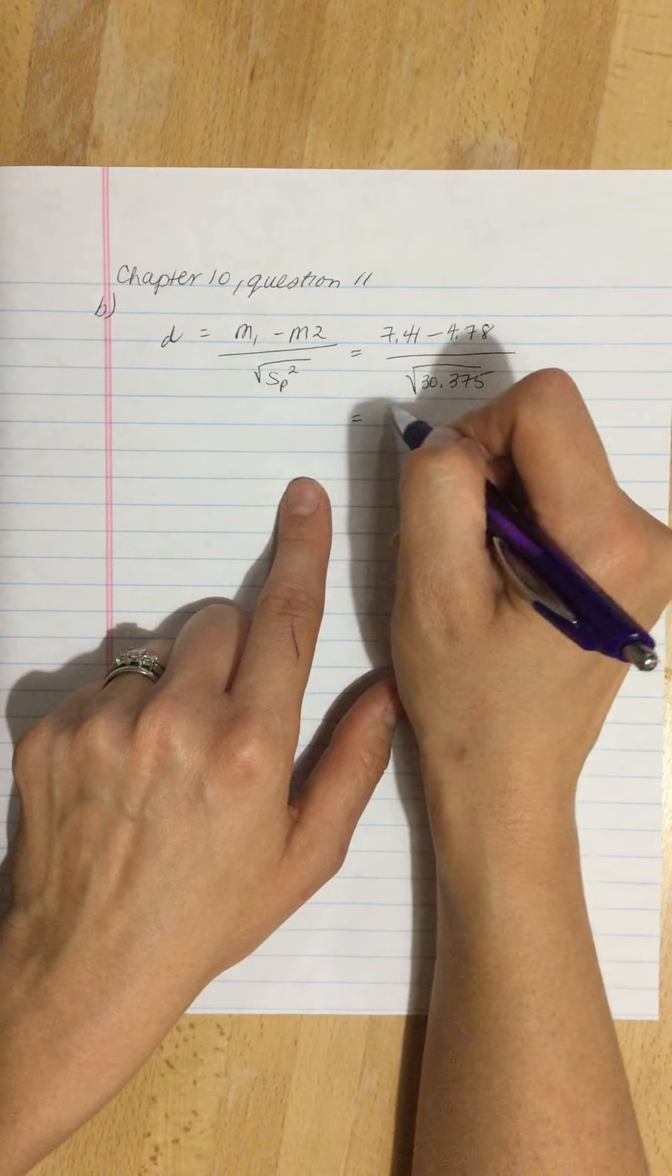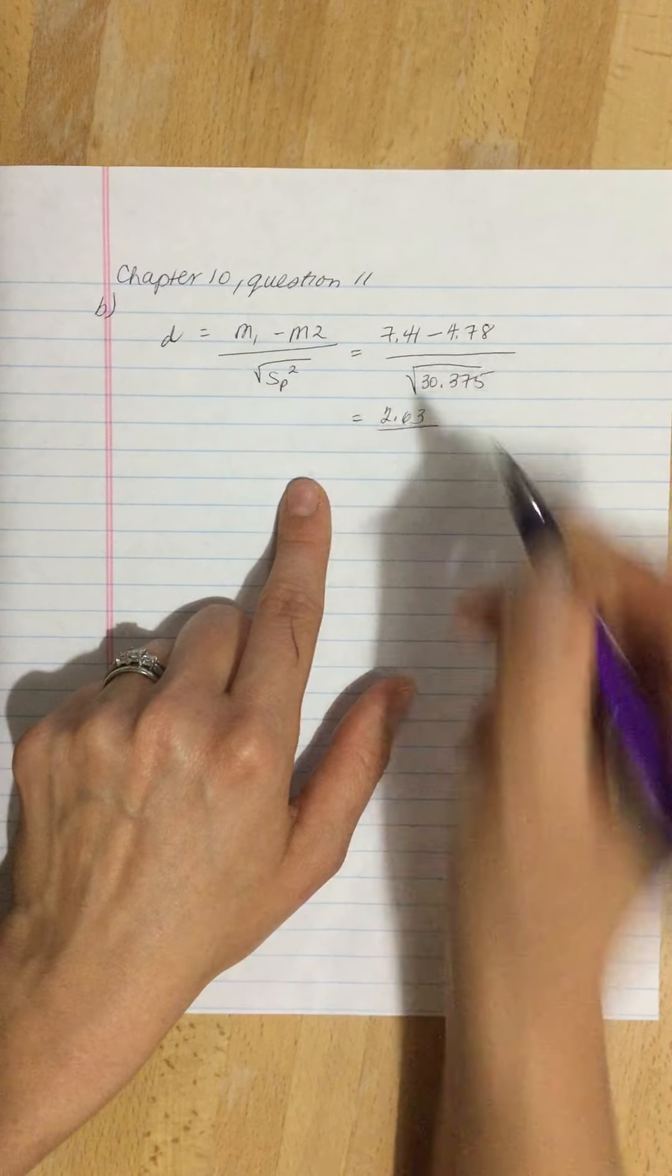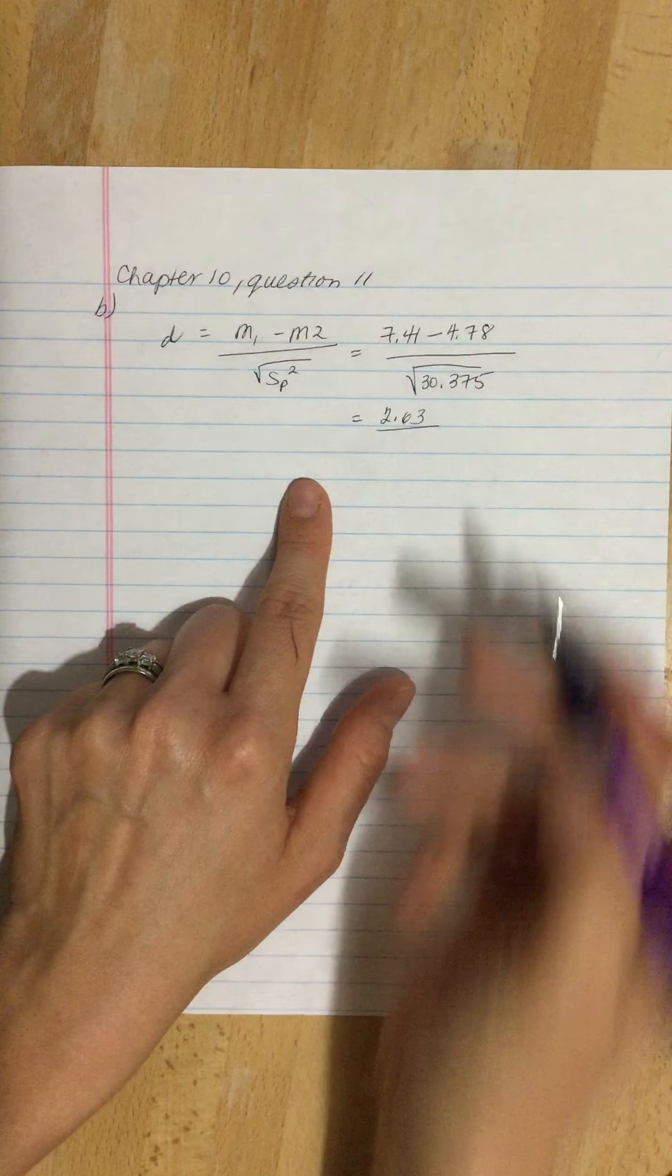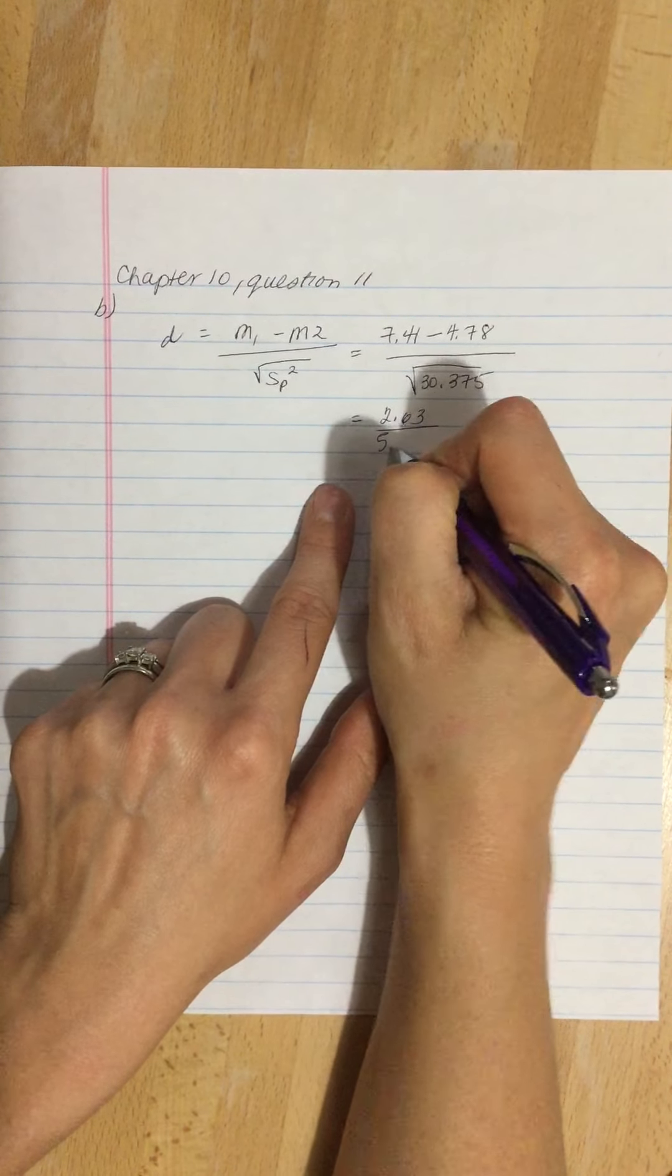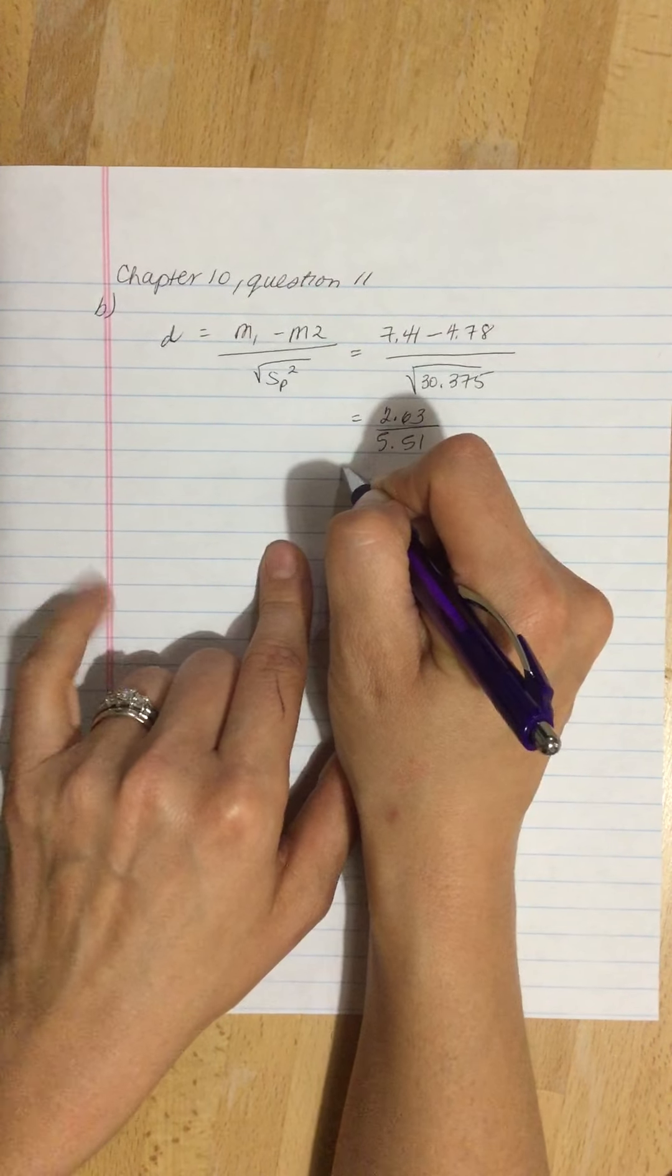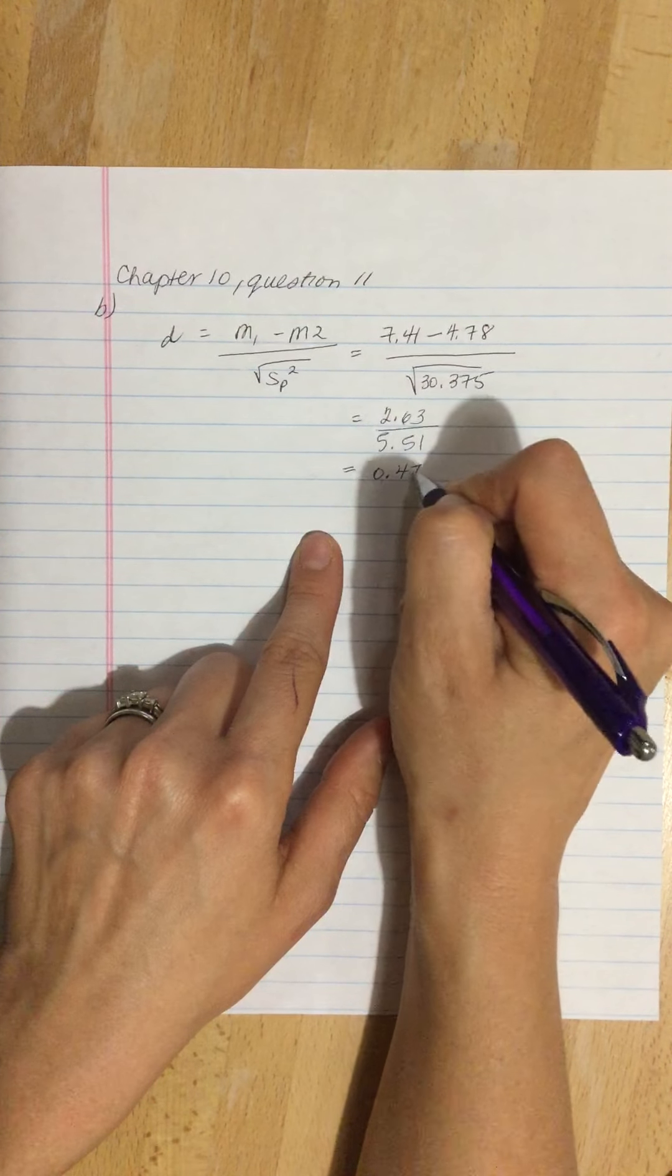So on the top we've got 2.63, and we're dividing it by the square root of 30.375, which is 5.51, which is 0.477.